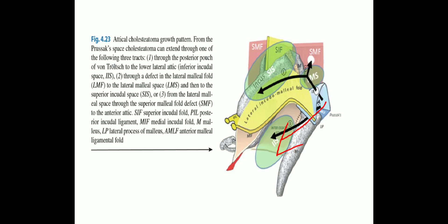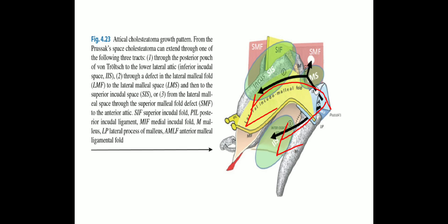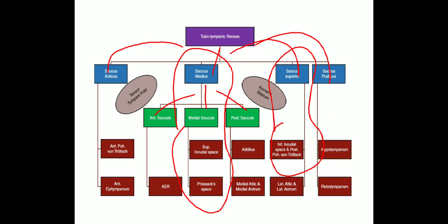The second pathway is from the Prusak space through the superior incudal space, reaching the posterior epitympanum to become a posterior epitympanic cholesteatoma. This tract correlates with the medial cycle of the saccus medius. The third pathway is from the Prusak space, where cholesteatoma extends to the anterior epitympanum via a defect in the superior malleal fold, becoming an anterior epitympanic cholesteatoma. This tract correlates with the embryology of the saccus anticus.